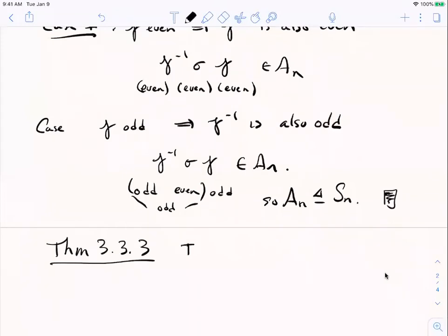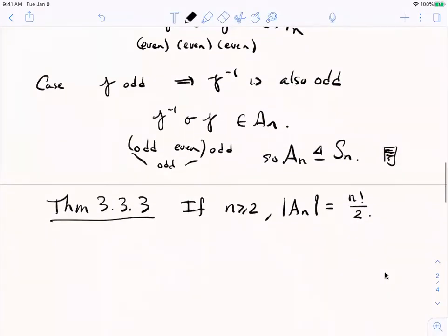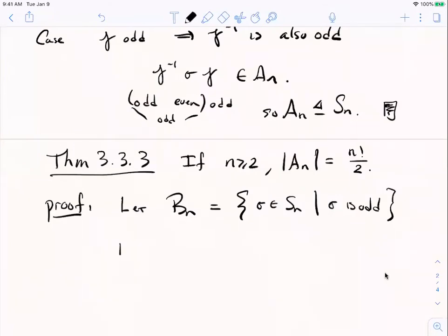Theorem 333 says that if n is at least 2, the number of elements in An is equal to half the size of the symmetric group. It's n factorial over 2. So here's how I'm going to try to prove that to you. So first of all, I'm going to note that since a permutation is either even or odd, that if you take, oh, sorry. Let me introduce some notation before I say this. Let me let say B sub n be the elements in S n that are odd.